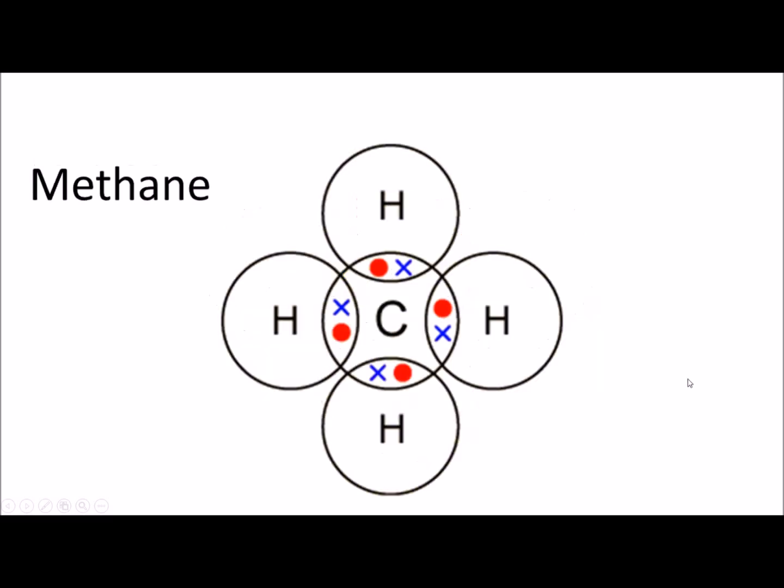The final example is methane or CH4. The central carbon atom is surrounded by four hydrogen atoms and this also forms a covalent bond.